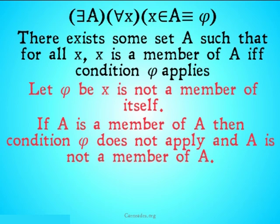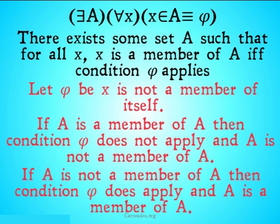We have halfway there to a contradiction. If A is not a member of A, then φ does apply, and A is in fact a member of A, and we're stuck in a loop, we're stuck in the paradox. This is Russell's paradox, and this is why it's a problem for this kind of basic naive comprehension principle.